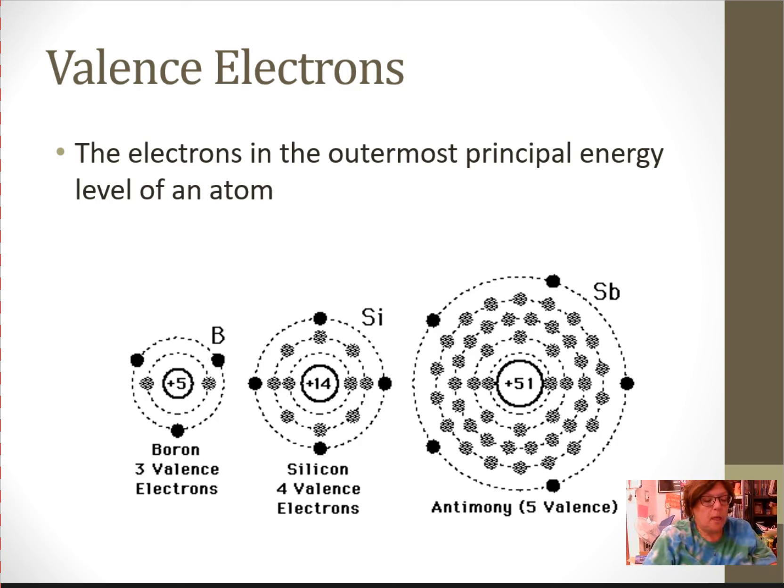Valence electrons are the electrons in the outermost energy level of an atom. We've talked very briefly about electrons. We said that Bohr said that they were in outer energy levels. There are different amounts that fall into each energy level, that each energy level can only hold so many. The outermost energy level is referred to as the valence. Valence electrons are those outer shell electrons, the outermost shell.